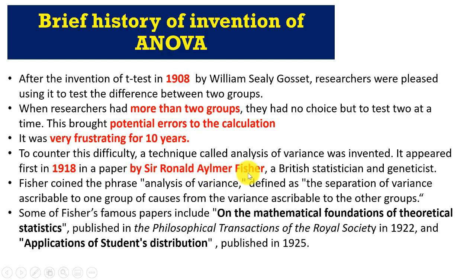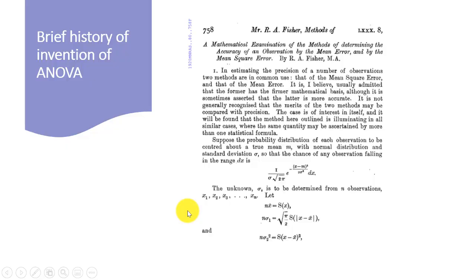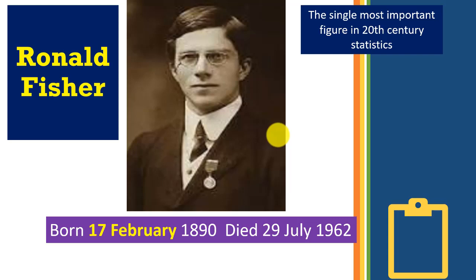By 1918, Sir Ronald Elmer Fisher, a British statistician and geneticist, came up with a technique called Analysis of Variance. It appeared in his paper — let me show you the raw paper that Fisher released to invent the Analysis of Variance. Fisher was born on February 17, 1890, and I really like him because we share the same birthday, February 17 — the greatest day of the year!